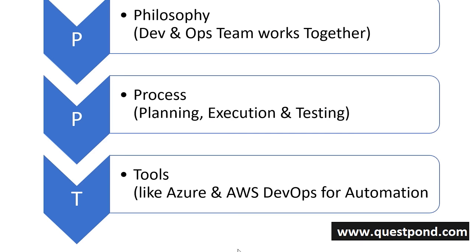Only philosophies don't work — philosophy needs to be backed up by tools and proper processes. So the agreed official definition is that DevOps is a combination of: philosophy (work together), process (proper steps like planning, execution, test), and tools (like Azure DevOps or AWS DevOps which help with automation). So DevOps is a combination of three things: philosophy, process, and tools.